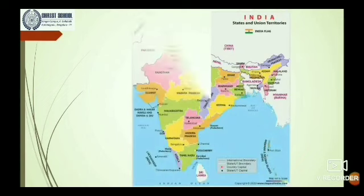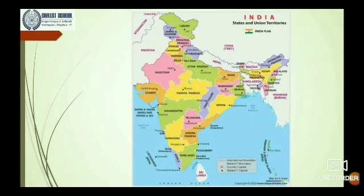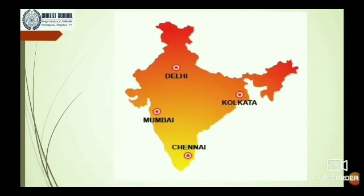Can you identify where the cities Delhi, Mumbai, Kolkata, and Chennai are located on this map? Look at the map of India. Delhi is located on the top, as you see in the image. Kolkata is located on the right side and Mumbai is on the left side. Finally, we can see Chennai on the bottom of the map.